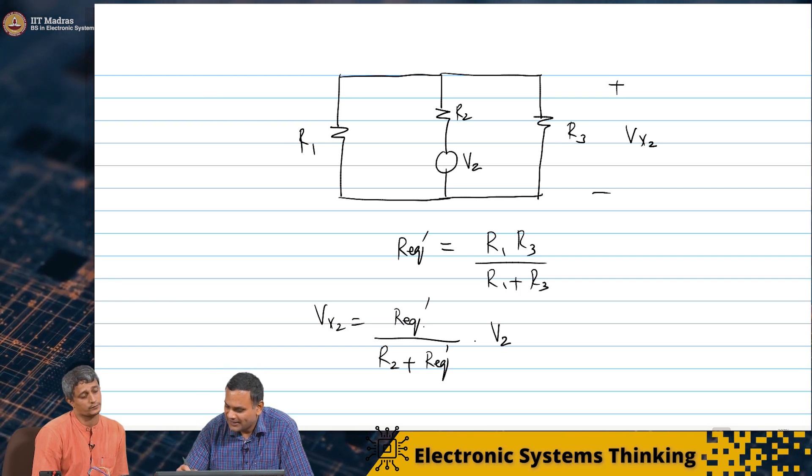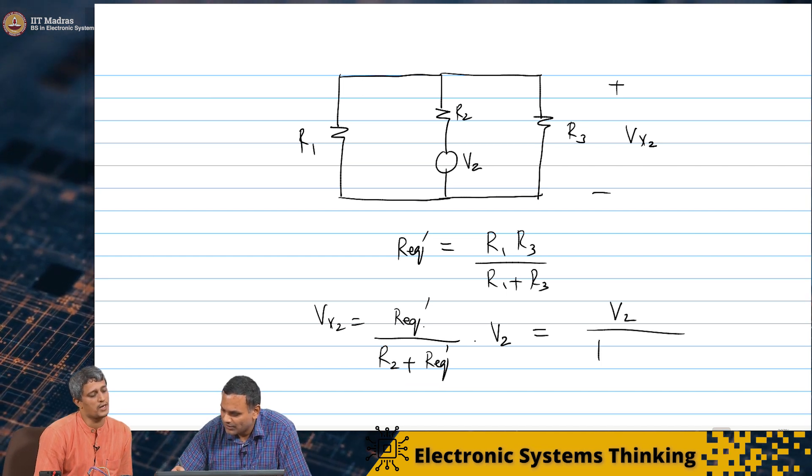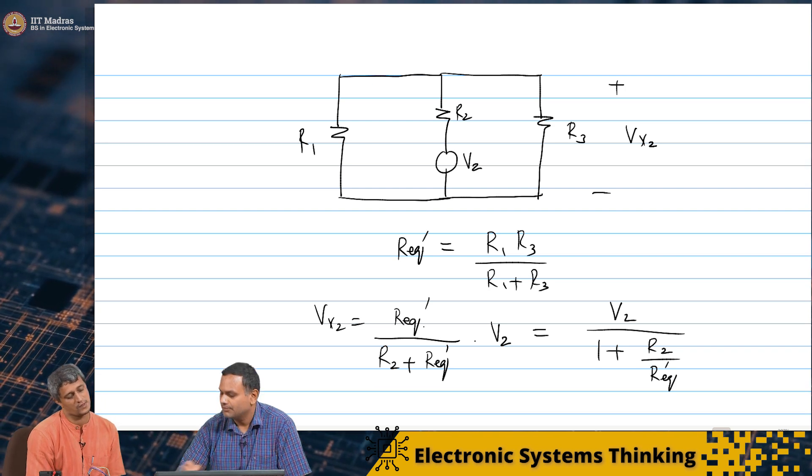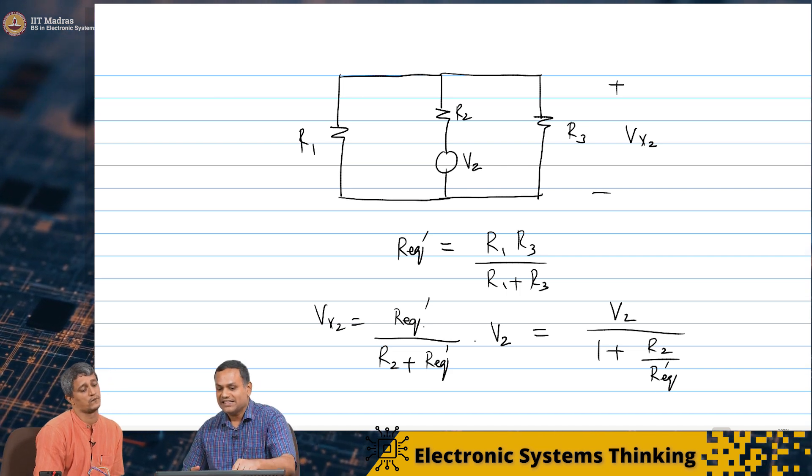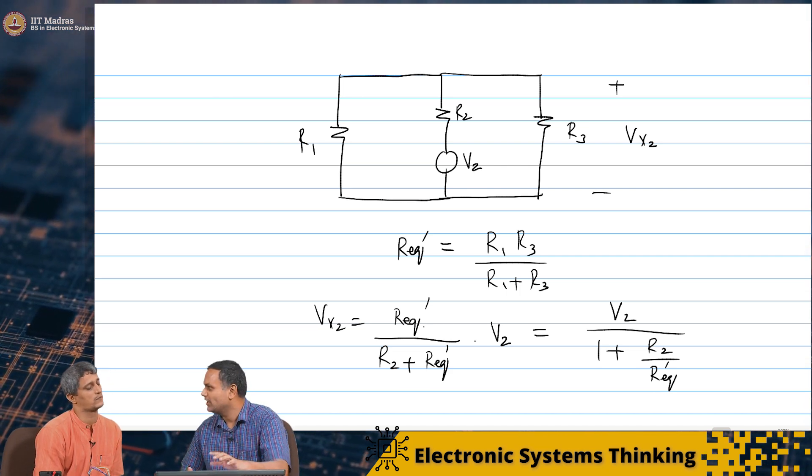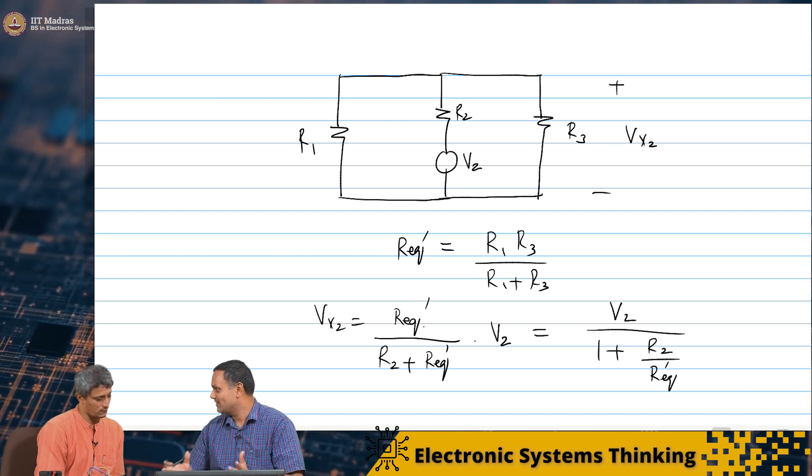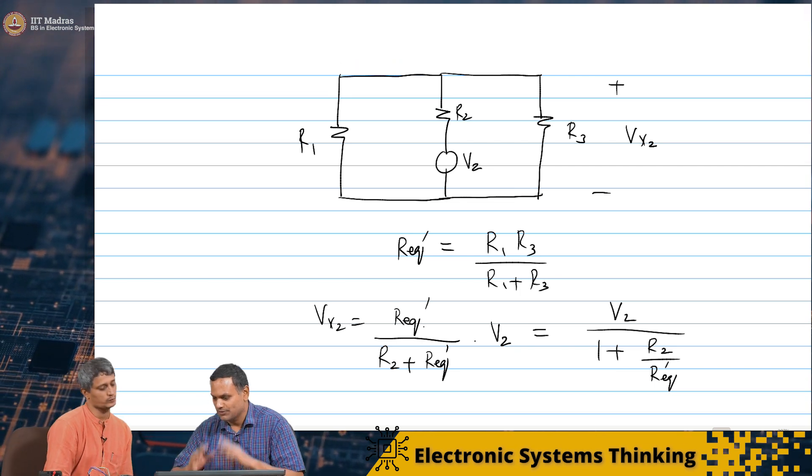And we will write it in this form. We will say that it is V2 by 1 plus R2 by R equivalent prime. It looks very similar. Exactly. The expression looks very similar. Because I think we just had V1 R1 V2 R2, the networks, as far as the voltage sources are concerned the rest of the network looks very similar. That is why we are getting this expression.